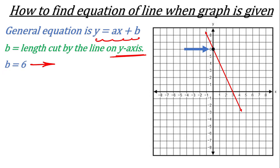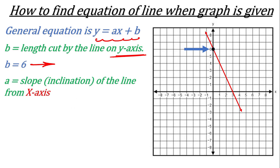Now how will you find the value of a? The name of this a is slope — or you can say inclination — whatever angle the line is making with the x-axis. I will make a separate video to describe this term in detail. So a is the slope of the line with the x-axis. To find the value of a, we need any two coordinates on the line.